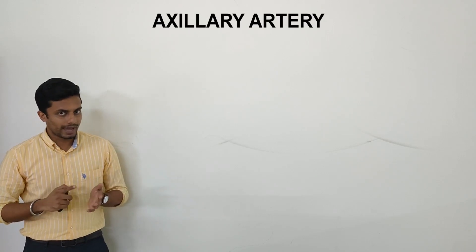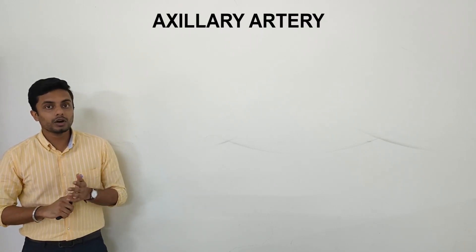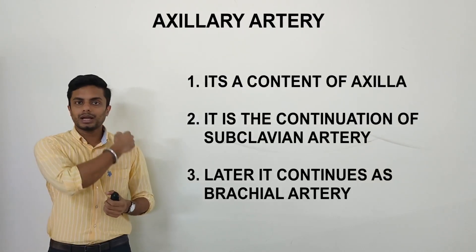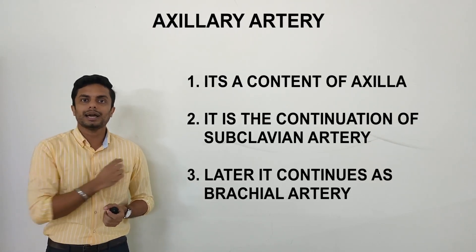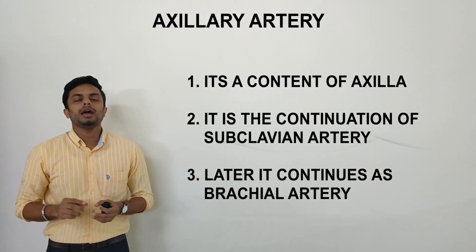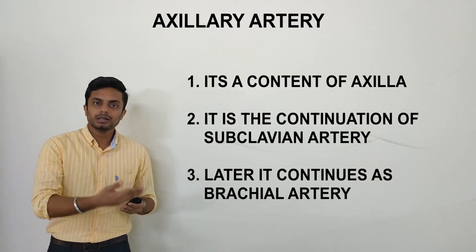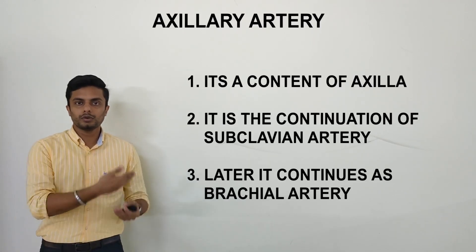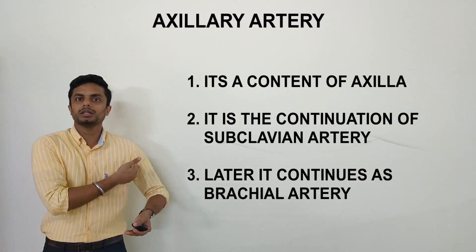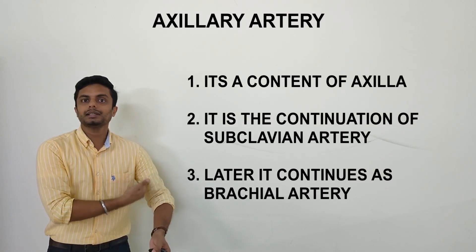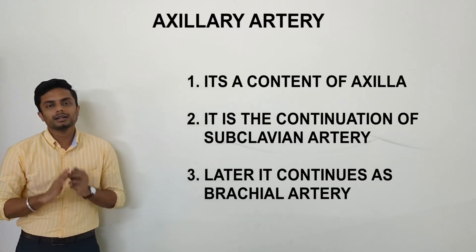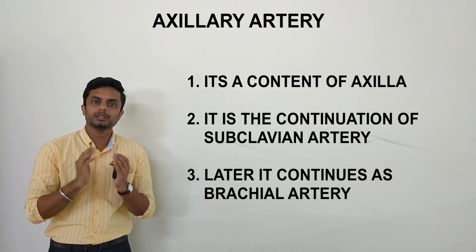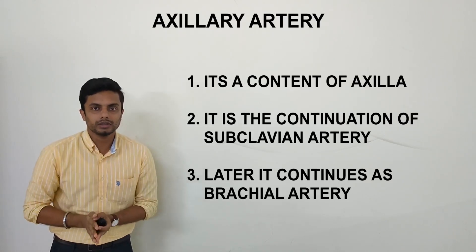The axillary artery is one of the contents of the axilla and it is the continuation of the subclavian artery. The subclavian artery is a major artery and a branch of the aorta. The subclavian artery continues into the axilla as the axillary artery, and after that the axillary artery continues as the brachial artery, which supplies the remaining parts of the upper limb. This particular artery is covered or enclosed in an axillary sheath.